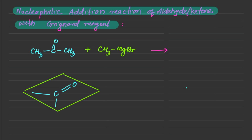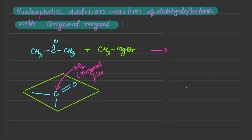Let's do a quick recap. The carbonyl carbon is sp2 hybridized. The structure of an sp2 hybridized carbon atom is trigonal planar, so you can see it lies on this plane right here.